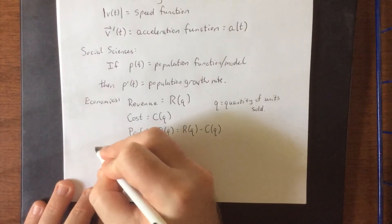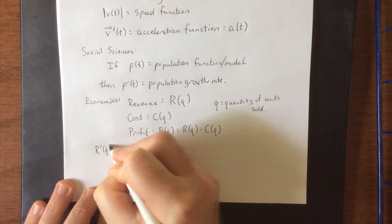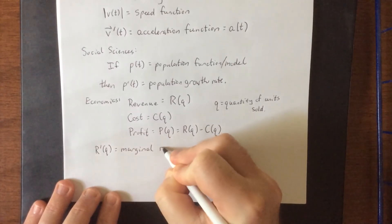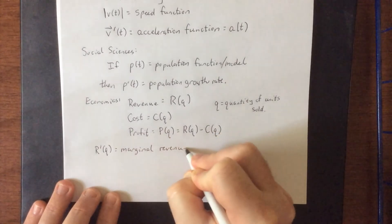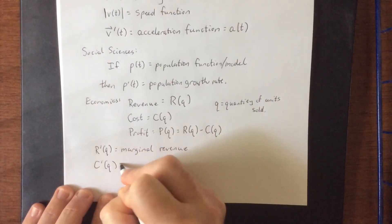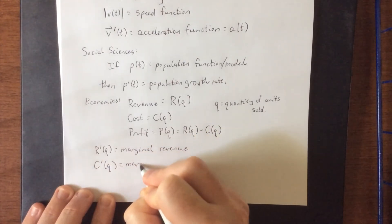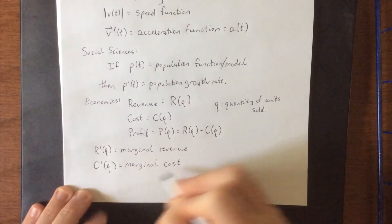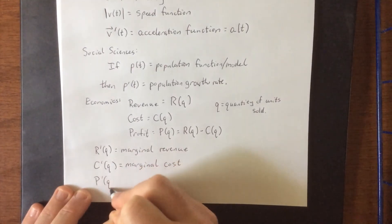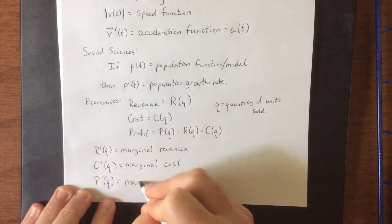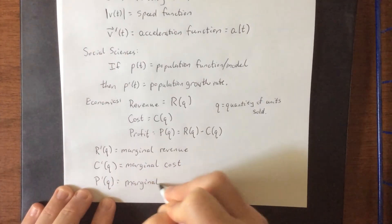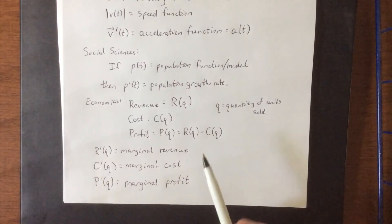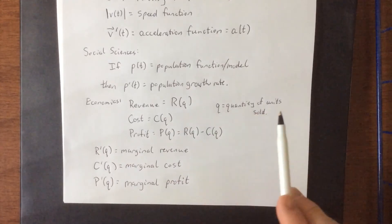So if you differentiate any of these with respect to the number sold, you get what's known as the marginal version of that. The marginal lets you know on more of a per unit basis what the cost of producing that additional thing is. The units on any of these marginal things would be dollars per unit sold.